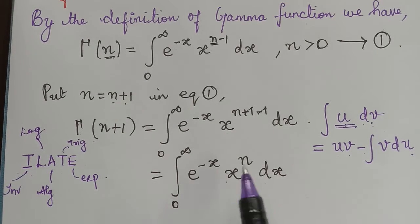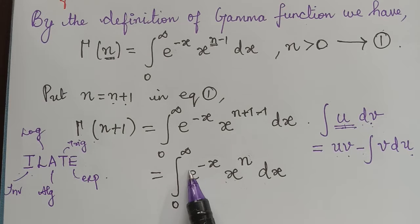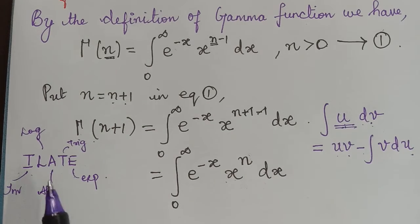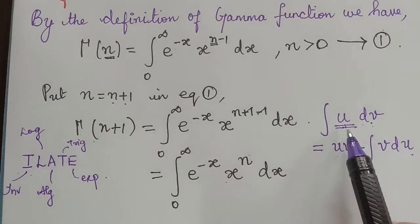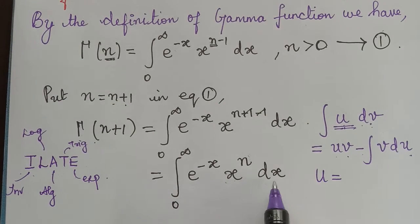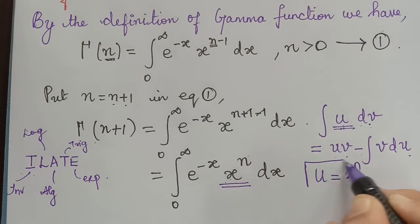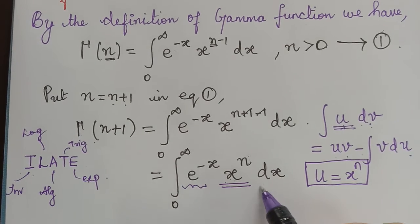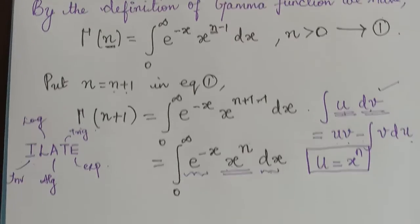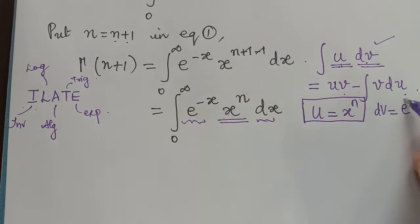Looking at our integrand, we have an algebraic function x to the power n and an exponential function e to the power negative x. Since algebraic comes before exponential in the ILATE order, u is chosen as x to the power n. All remaining terms are taken as dv, so dv equals e to the power negative x, dx.